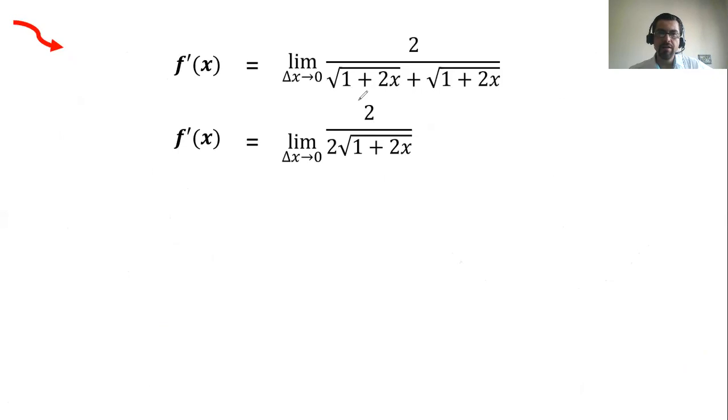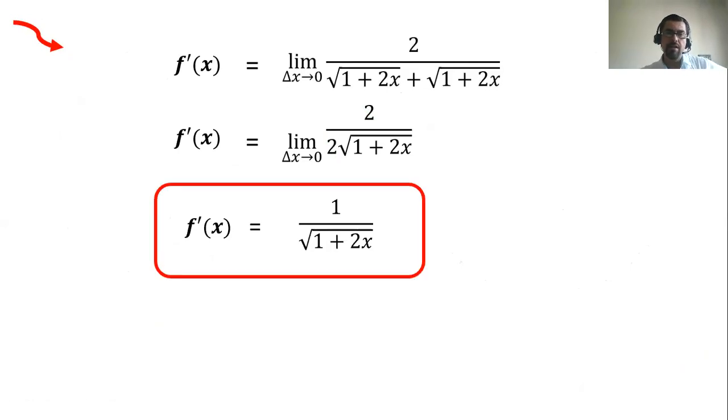All we have to do is divide or we can simplify: two divided by two gives me one. And we're pretty much done. You can just express that without the limit notation anymore because we have evaluated the limit. And this is the answer. This is the derivative we were looking for when we were given the function the square root of one plus two x. The derivative we found is one over the square root of one plus two x.